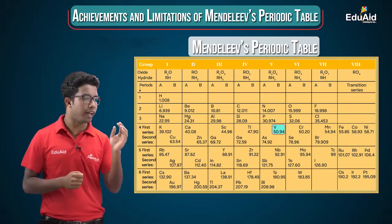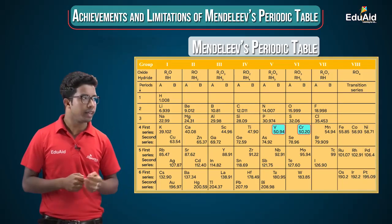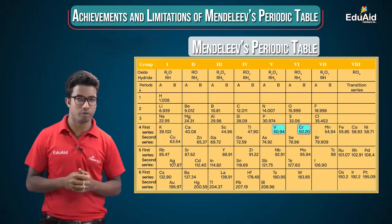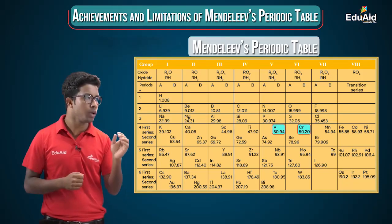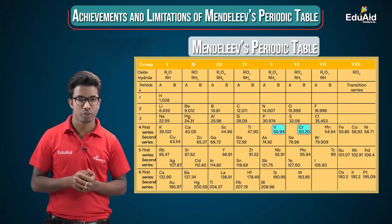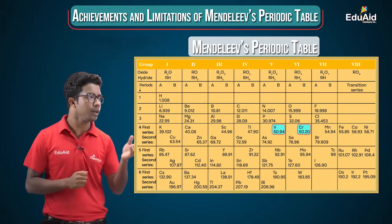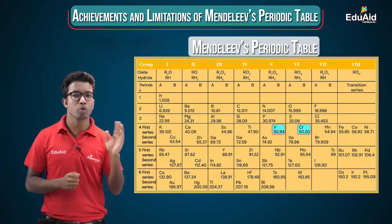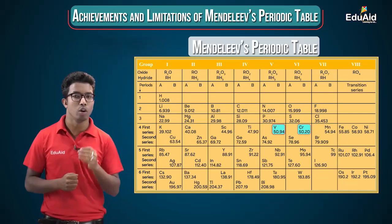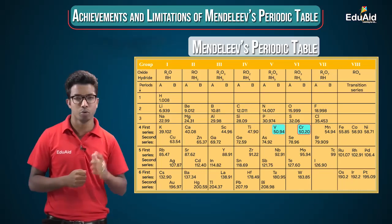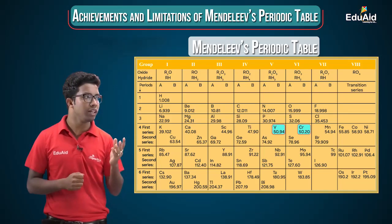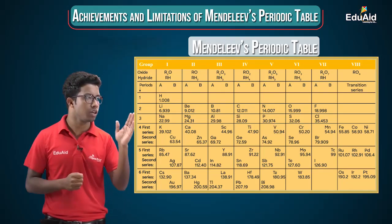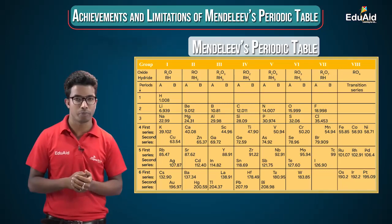Similar is the case with vanadium and chromium. The atomic mass of vanadium is 50.94, and the atomic mass of chromium is 50.20. So here also, vanadium has a higher atomic mass and is placed right before chromium, which has the lower atomic mass of 50.20.